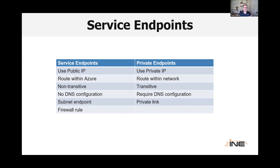If I just set up service endpoints, that is non-transitive. It does not require any DNS configuration because it's still going out to the same public IP address. You do need to have what's called a subnet endpoint. What that does essentially - this is what technically is a service endpoint - is says this subnet can take advantage of service endpoints and can route through Azure to the public endpoints rather than going actually out to the public internet. You will also set up a firewall rule on the service, and the subnet endpoint and the firewall rule really go together, and you can create them at the same time.